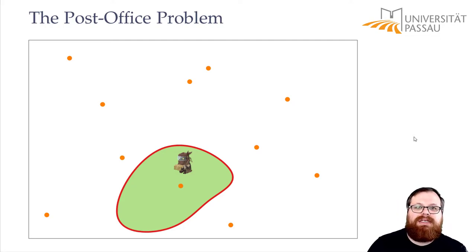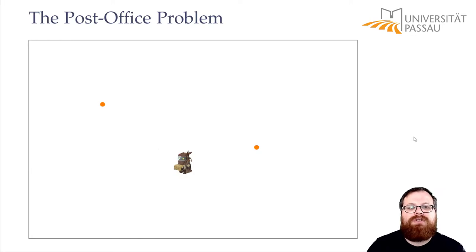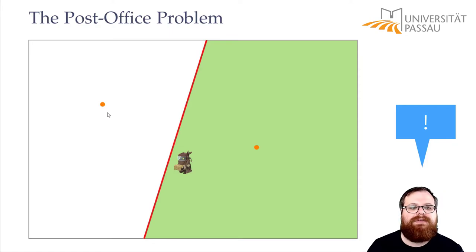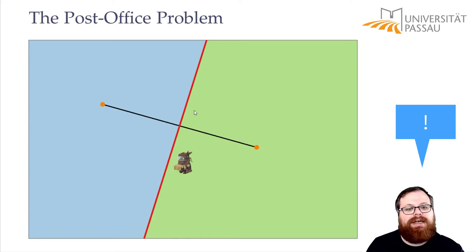Let's first have a look at the very simple version of this problem where we only have two post offices. How do the regions look like now? In this case we would take the bisection of these two points. And now if you are on the right side of this then this is the closer post office and if you are on the left side then this is the closer. And we get this bisection if we just take the segment between them and then take an orthogonal through the midpoint of this.